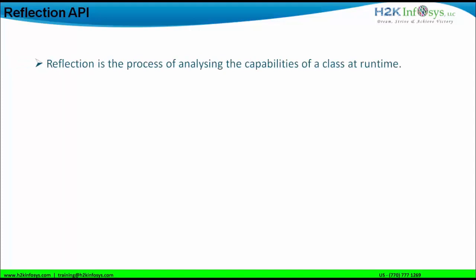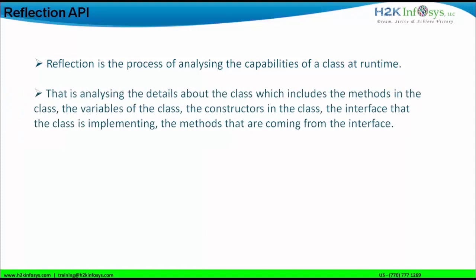Reflection is a process of analyzing the capabilities of a class at runtime. If you want to get information about the class or analyze the capabilities of the class at runtime, we can use the Reflection API. Analyzing means the details about the class, which includes the methods in the class, the variables of the class, the constructors present in the class, the interface that the class is implementing, or the methods coming from the interface. Even the methods implemented from the super class — that is, the object class — can also be shown using the Reflection API.